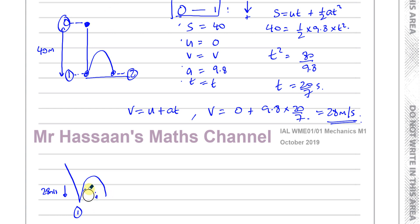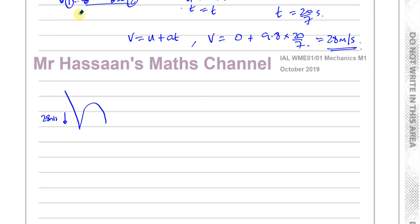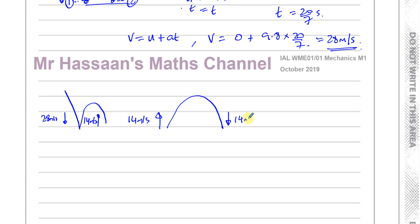After it hits the ground, its speed is reduced by a half, so it's 14 meters per second — the speed with which it takes off again. When it hits the ground the second time, it will also be going 14 meters per second but in the opposite direction. Now let's look at between points 1 and 2.